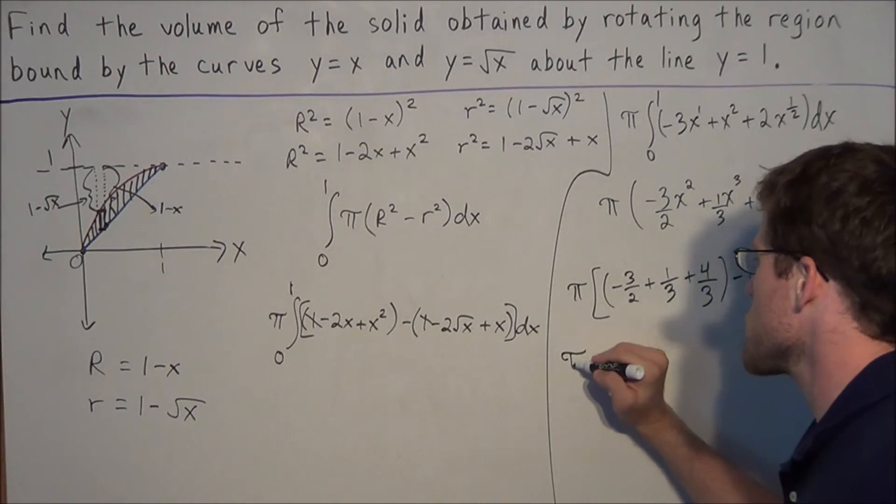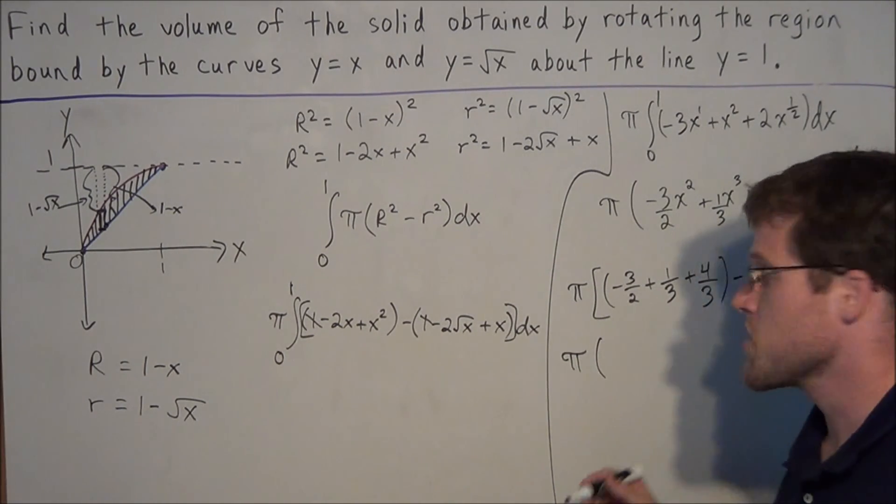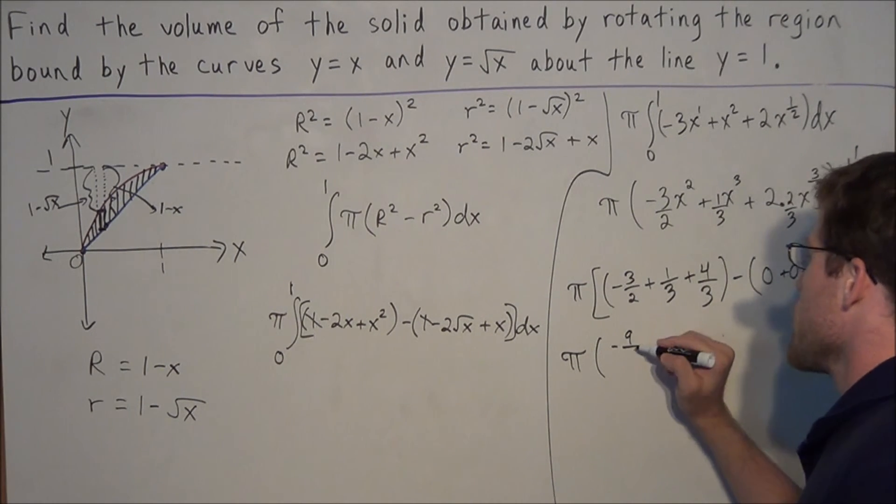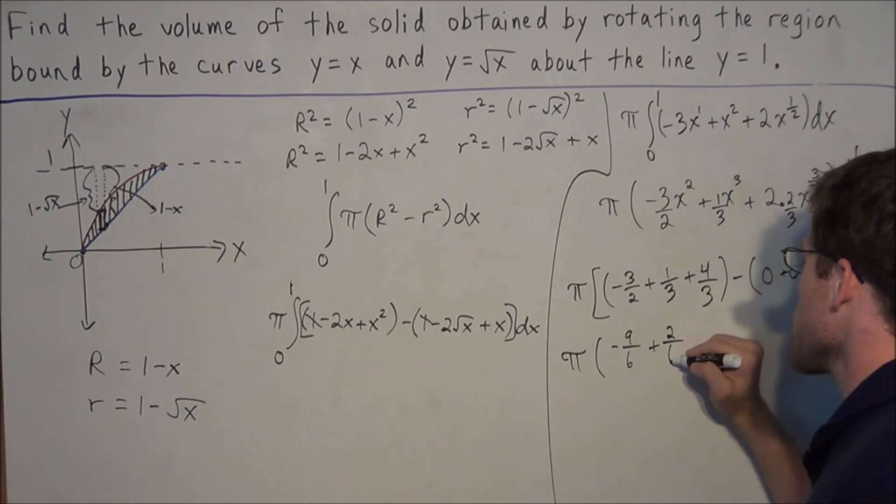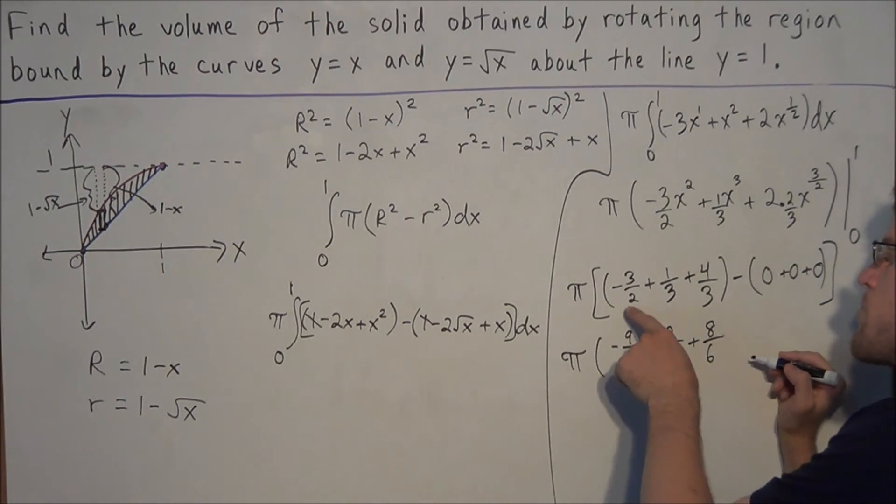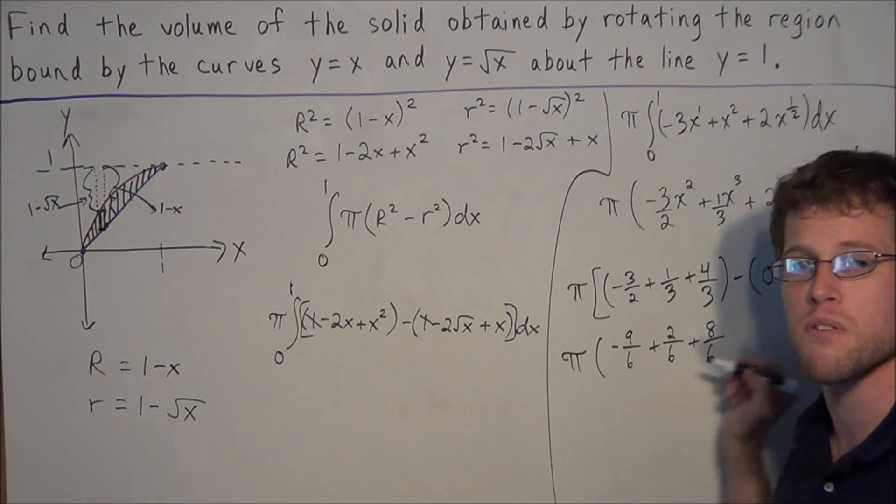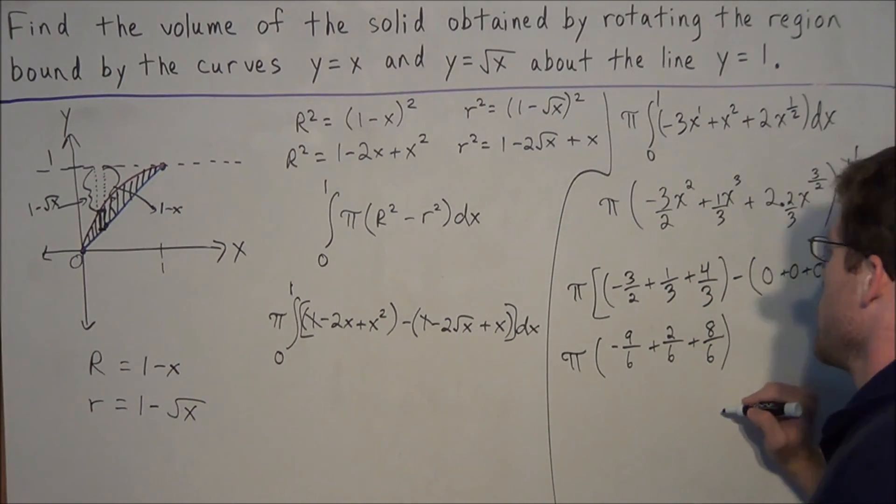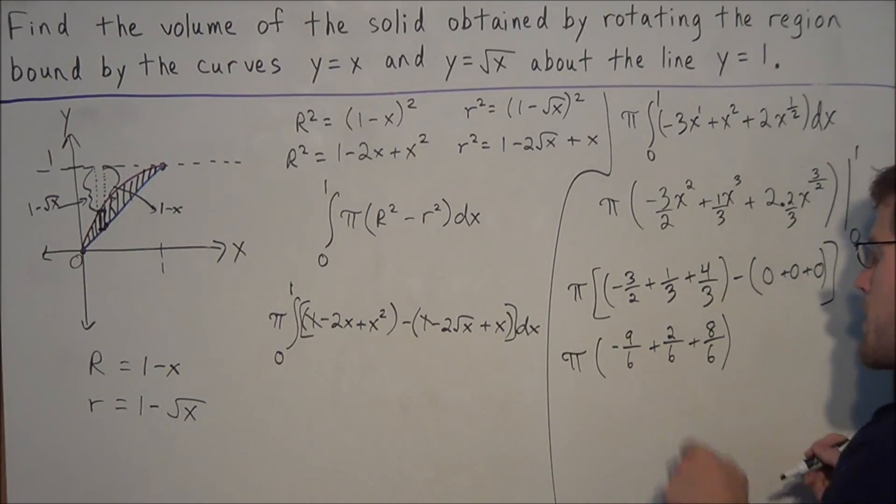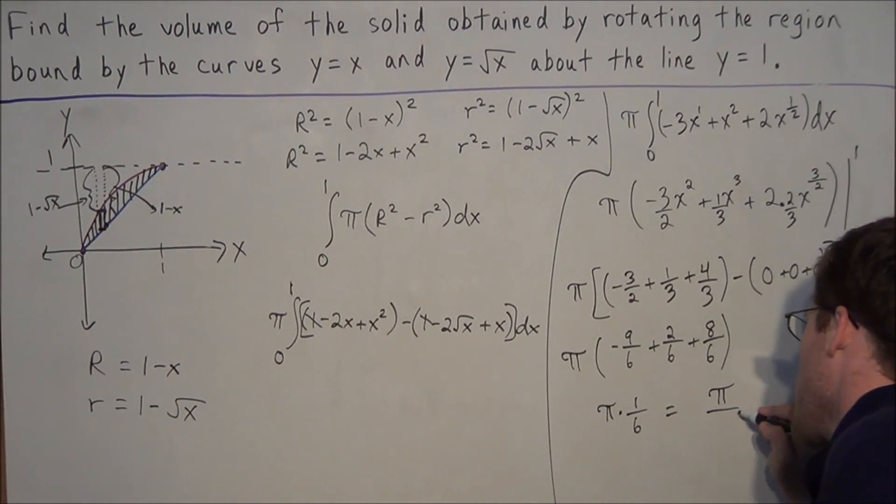So the final answer, all we need to do is just add these three fractions. But what we'll do first is generate common denominators. We could have a common denominator of 6. So for the first piece, we could say that this is negative 9 over 6, plus 2 over 6, plus 8 over 6. So the first fraction, we just multiply the top and bottom by 3, the numerator and denominator. And for the second and third fractions, we multiply the numerators and denominators by 2. So then our final answer, we have 2 over 6 plus 8 over 6 is 10 over 6. 10 over 6 minus 9 over 6 is 1 over 6. So we have π times 1 over 6, which is equal to π over 6.